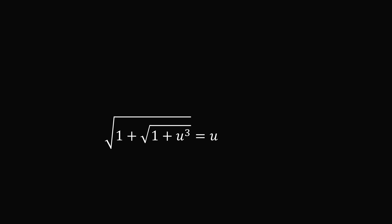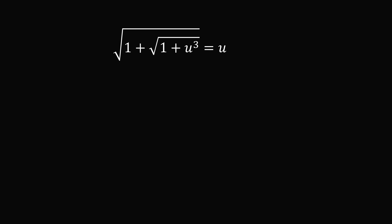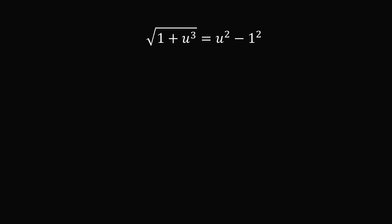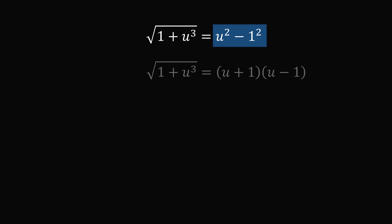On the right-hand side we substitute the cube root of x with u. On the left-hand side we substitute x with u cubed. To get rid of the square roots, we square both sides of the equation. We still have one more square root, so we move the 1 term to the right-hand side, giving u squared minus 1. Since 1 equals 1 squared, this is a difference of squares: u squared minus 1 squared, which factors as (u plus 1)(u minus 1).